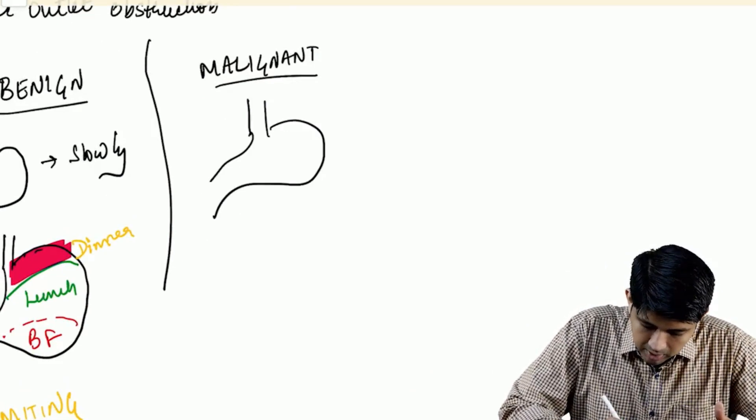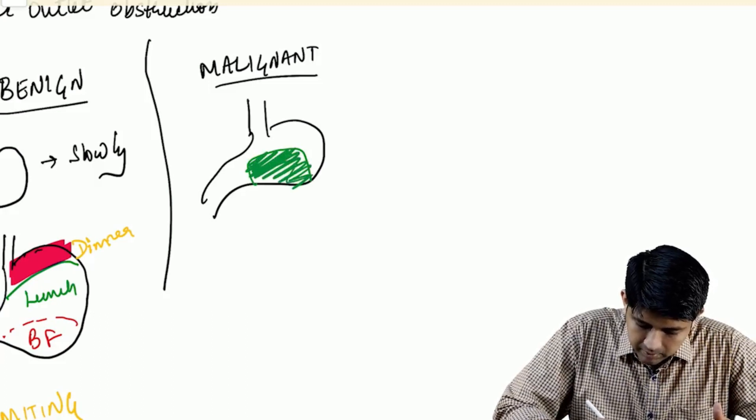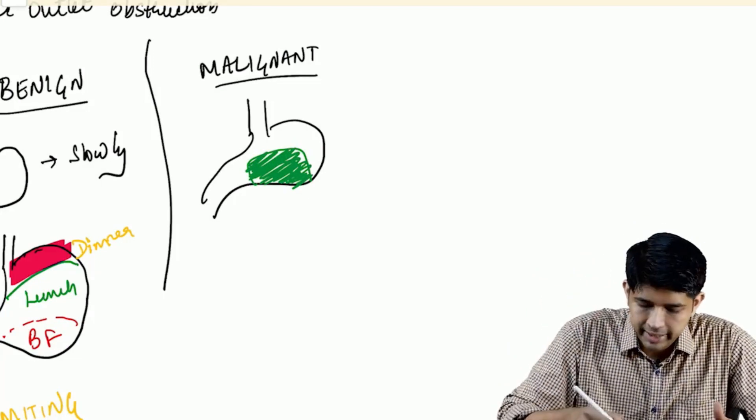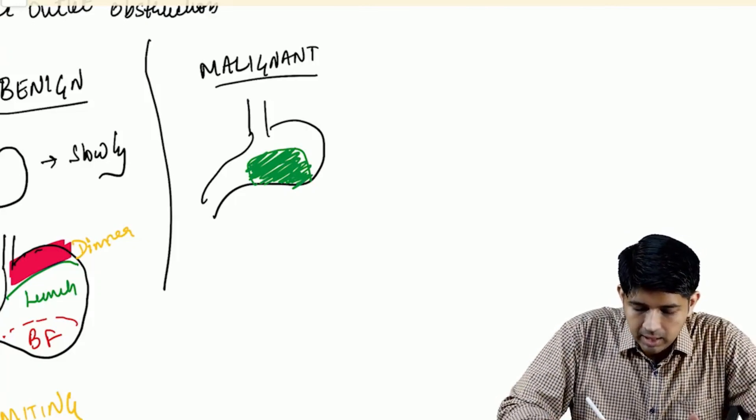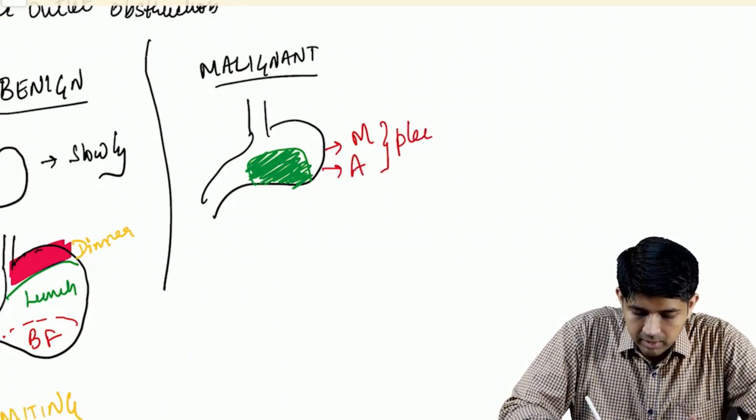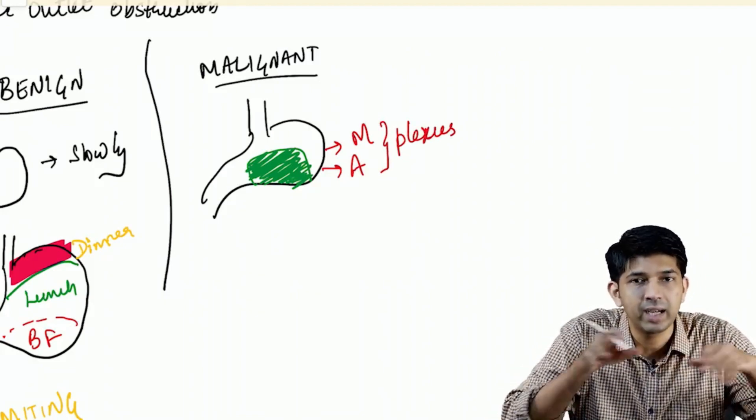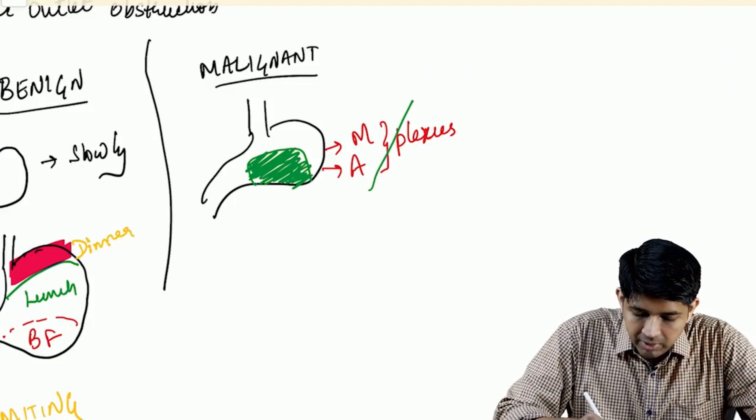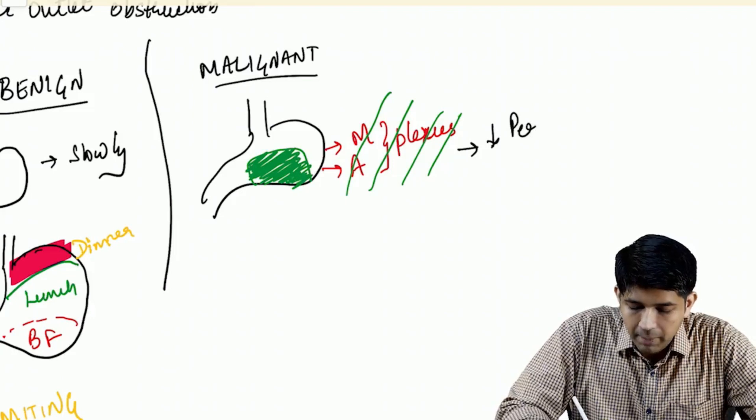Now let's look at the malignant bit of it. You have a stomach and you have a growth here - this is the cancer. For food to go down, the stomach should have peristalsis. For the stomach to have peristalsis, the mesenteric and Auerbach plexus are very important. But in a case of CA stomach, we know that it infiltrates - the cancer goes on infiltrating into the layers of the stomach. Eventually they will infiltrate the mesenteric and Auerbach plexus, so there is reduced peristalsis.